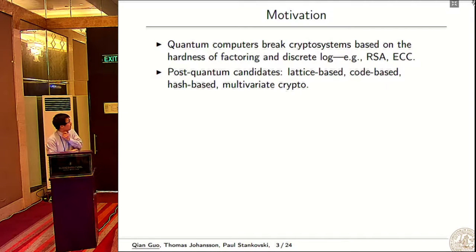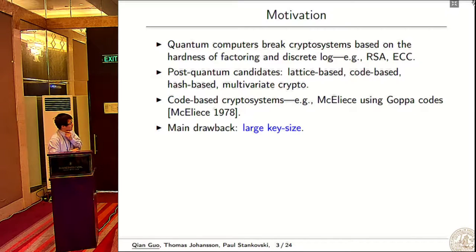We know that quantum computers will break cryptosystems based on the hardness of factoring and discrete log like RSA and ECC. So people are working on looking for post-quantum candidates. There are four competitive directions: lattice-based, code-based, hash-based, and multivariate-based crypto.